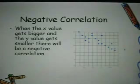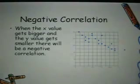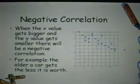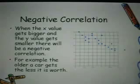When the x value gets bigger and the y value gets smaller, there will be a negative correlation. For example, the older a car gets, the less it is worth.